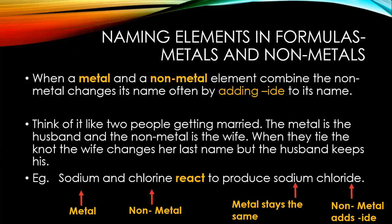Naming elements in formulas: metals and non-metals. This is a little confusing, but hopefully this analogy will help. When a metal and a non-metal element combine, the non-metal changes its name, often by adding IDE to its name. Think of two people getting married. The metal is the husband and the non-metal is the wife. When they tie the knot, the wife changes her last name but the husband keeps his. We can relate that to metals and non-metals. The metal doesn't change, but the non-metal changes. For example, when sodium and chlorine react, they produce sodium chloride. See how sodium remains the same? The non-metal adds IDE to the end, replacing INE with IDE.